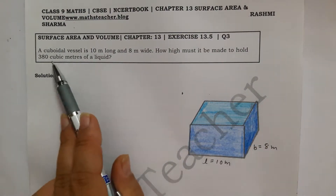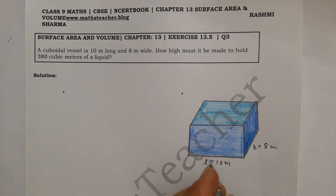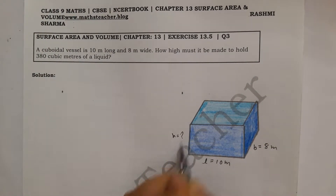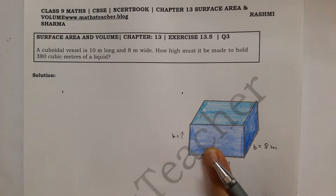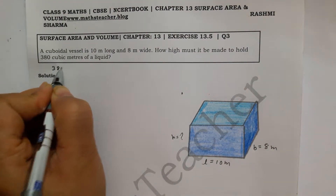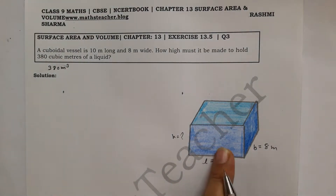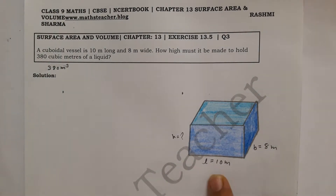How high must it be made to hold 380 cubic meters of liquid? So the height is not given here. This cuboidal tank or vessel can hold 380 cubic meters of water. That means its capacity, that means its volume. You have given length and width, and you have to find height.